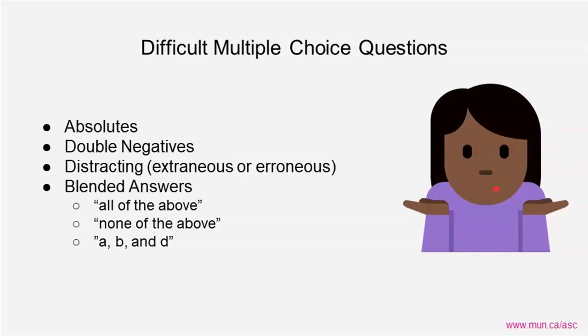Double negatives in the question or the answer can be confusing and very easily missed if you're reading too quickly. For these, you may need to reword them in your head so that you can hear them in a way that makes sense. For example, if a question said there are no insignificant numbers, what it's really saying is there are significant numbers.